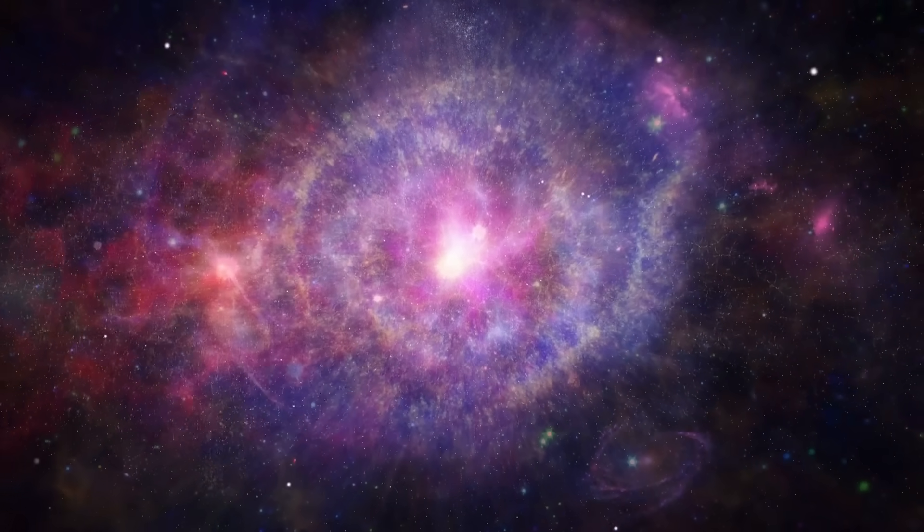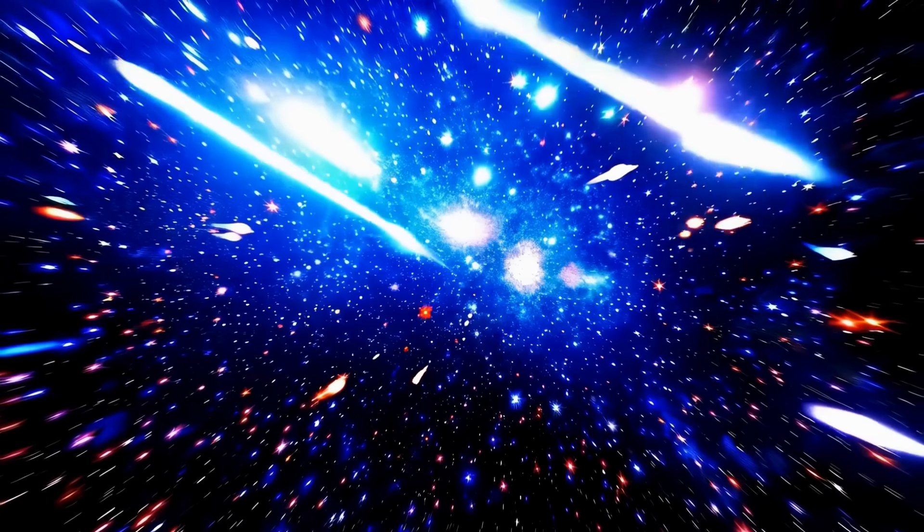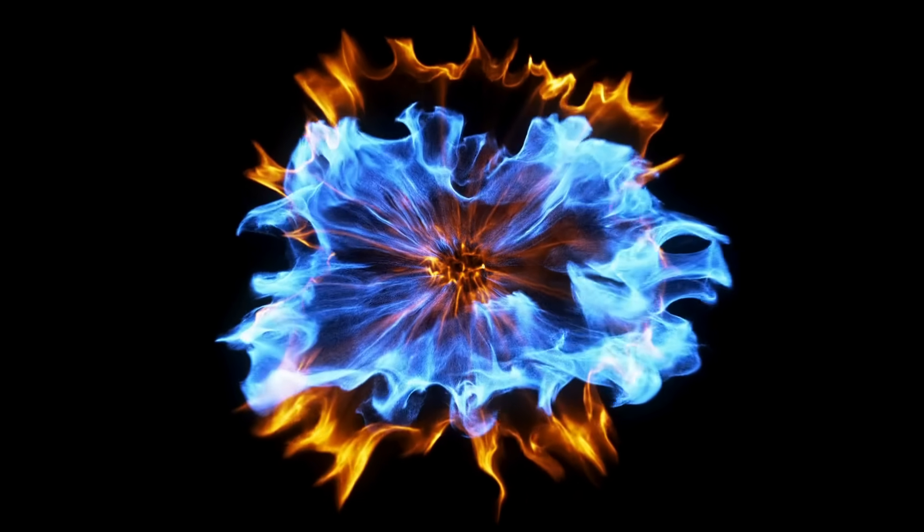Only the third interstellar object ever confirmed, it joined the ranks of Oumuamua and 2I-Borisov, but with a presence that dwarfed them both. What makes 3I-Atlas so extraordinary? Let's start with its sheer scale.